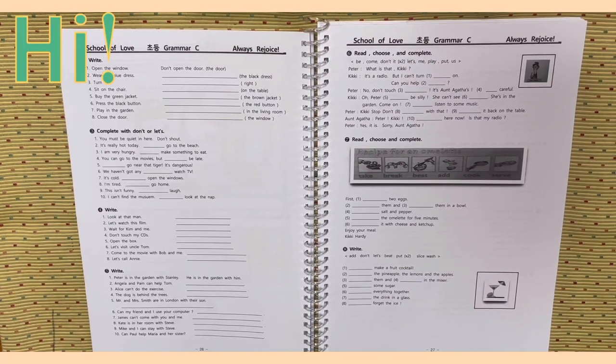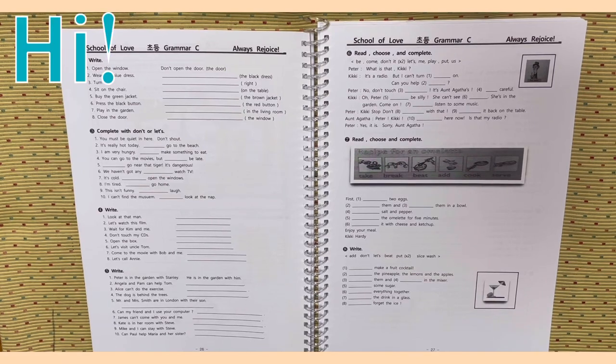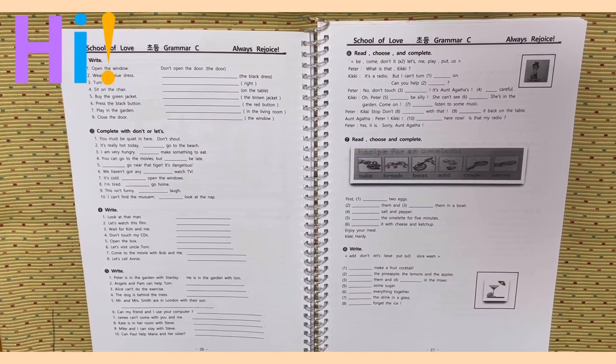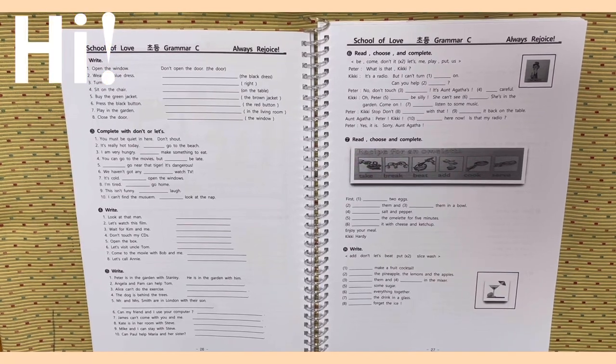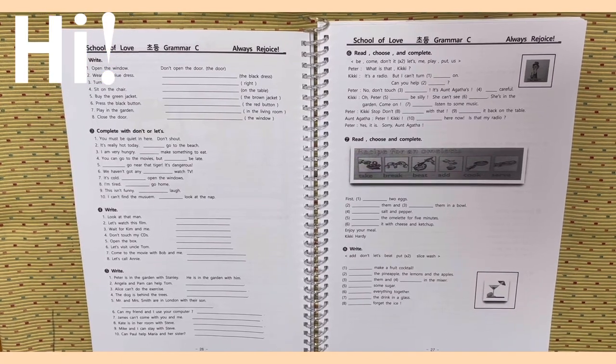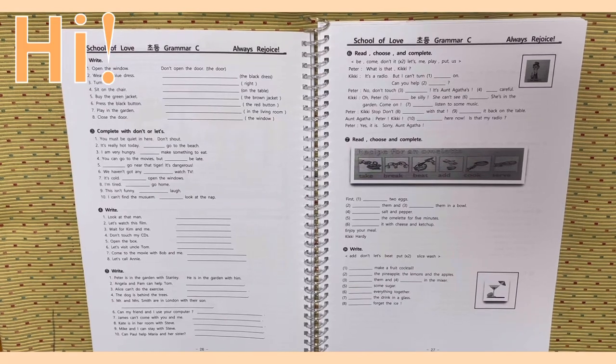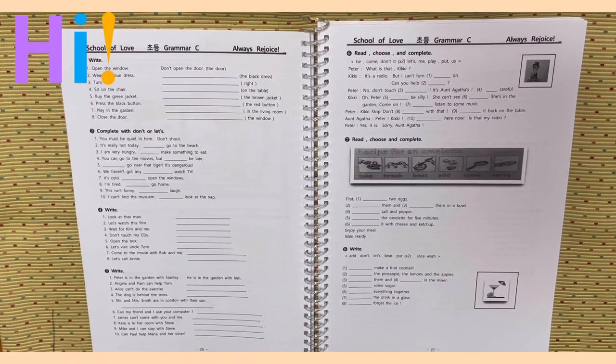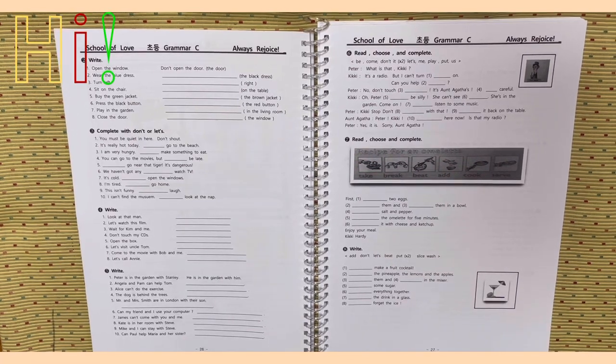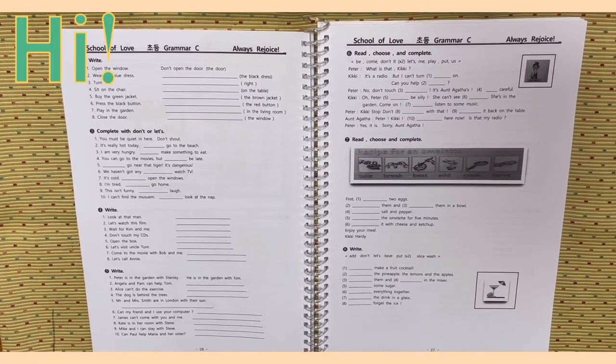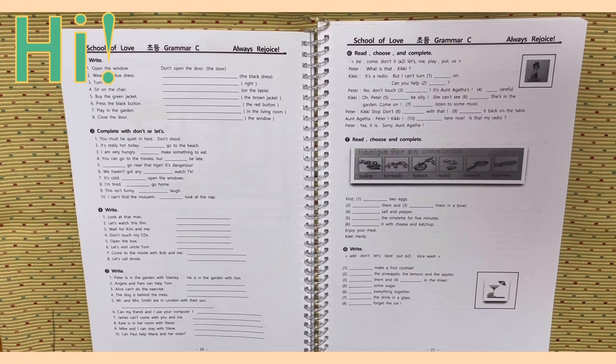Activity 4. Write. Look at that man. 자, 목적격으로. Number 1, look at him. That man 바꿔줍니다. Number 2, let's watch this film. Number 3, wait for Kim and me. 4, don't touch my CDs. 5, open the box. 6, let's visit Uncle Tom. 7, come to the movie with Bob and me. 8, let's call Annie.